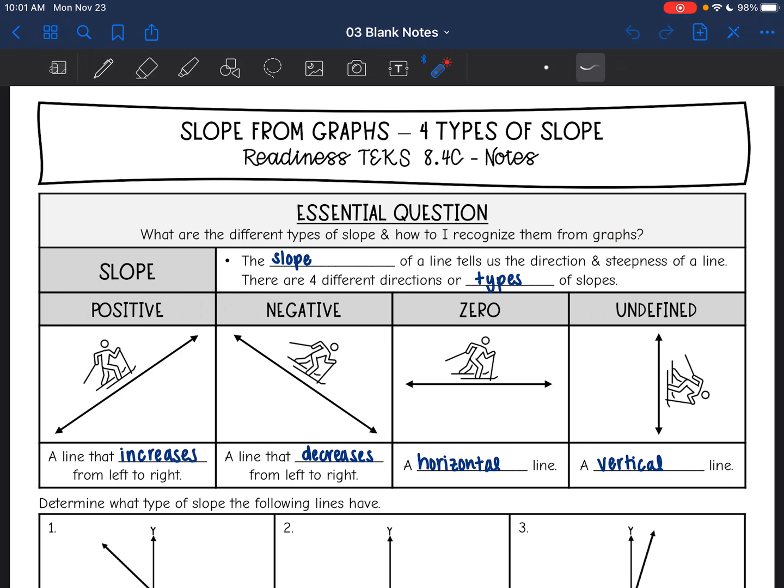So the slope of a line tells us the direction that the line is going and it tells us the steepness. Today we're just going to look at the direction. And there are four different directions or types of slopes.